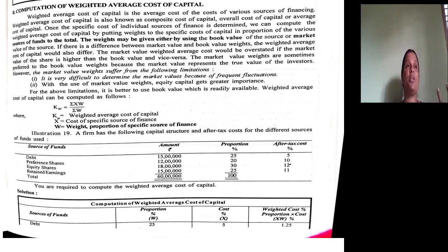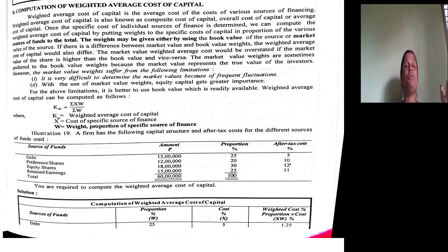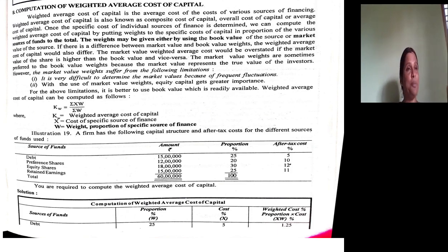Calculation of weighted average cost of capital involves certain steps. The first step is calculation of the cost of each and every individual source of financing — that is the specific cost of capital. The second step is calculation of weight. The third step is multiplying weight with cost. The last step is adding up the products of weight multiplied by cost. This is how we calculate weighted average cost of capital.